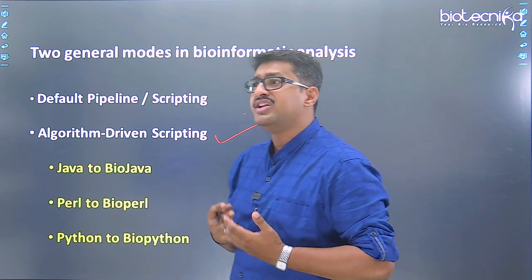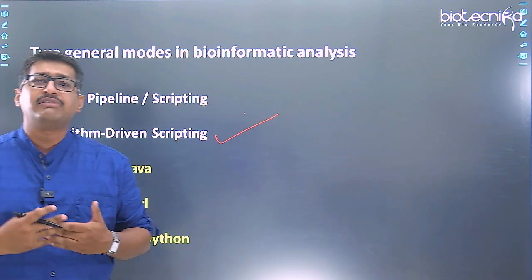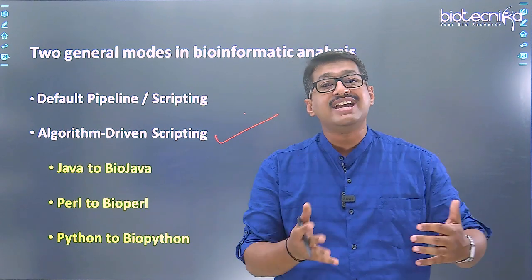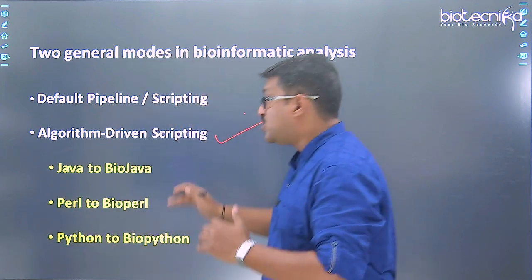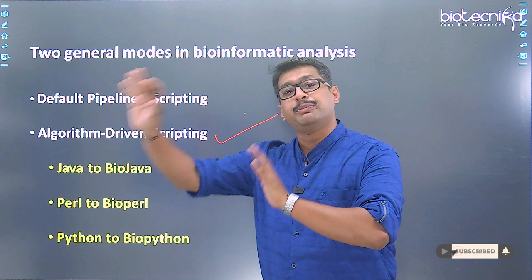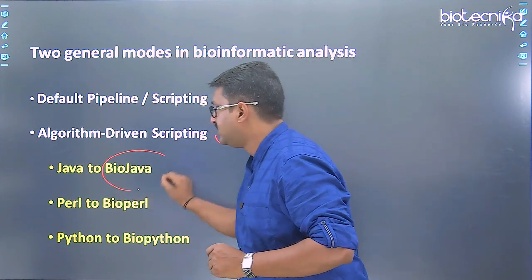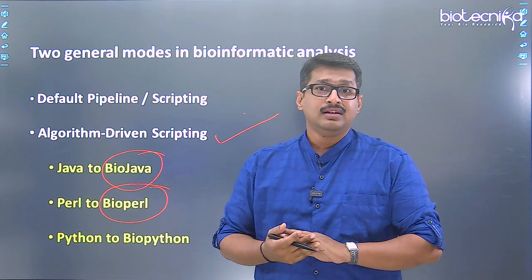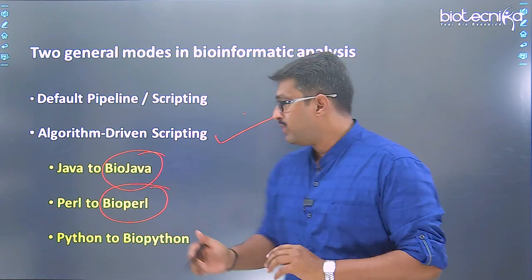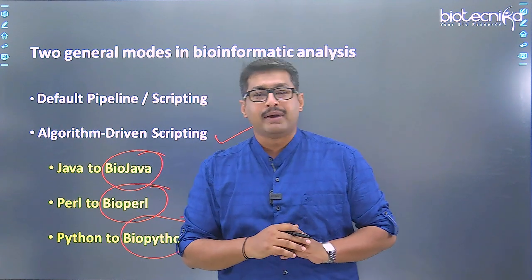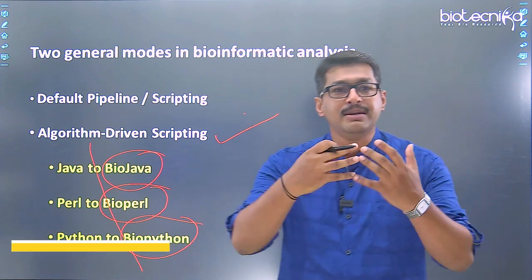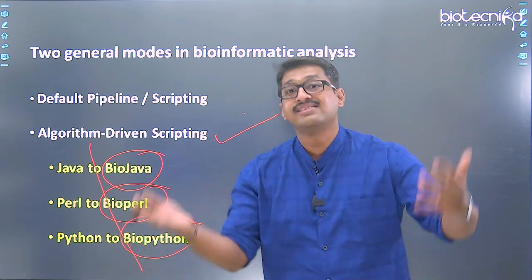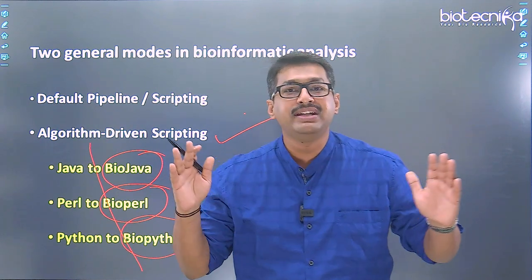Initially there were many languages built just to communicate with the computer. But as biology evolved, people started applying programming languages in biology. Java became Bio-Java, Perl was transformed into Bio-Perl, and very importantly Python — which has been a huge boom in bioinformatics — has been designated as Bio-Python. All three languages when used in biology are called Bio-Programming. They still have the foundation of Java, Perl, and Python, but have been applied onto biology.